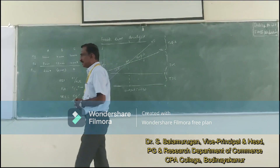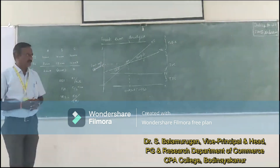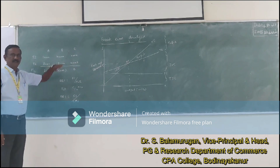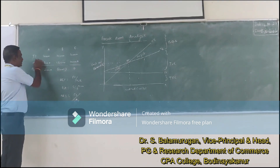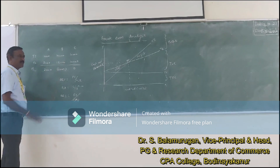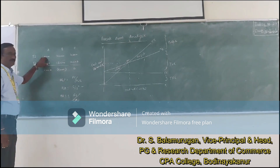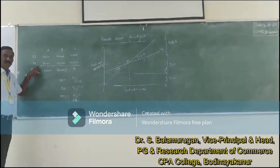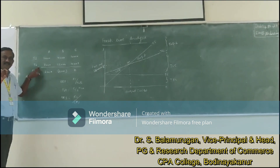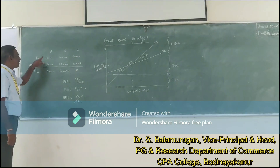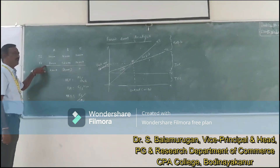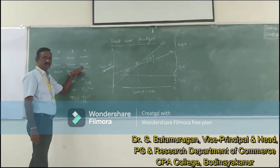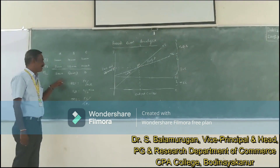Let us see an example. Assume we have three companies: A, B, and C. The total sales of all three companies is 10,000 rupees. The total cost means the expenses — the combined fixed and variable costs. For company A, the total cost is 8,000 rupees. For B, that will be 12,000 rupees. For C, it is 10,000 rupees.